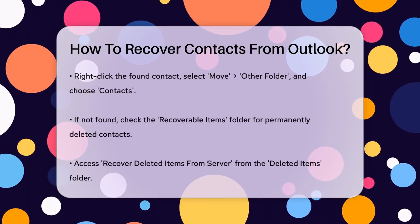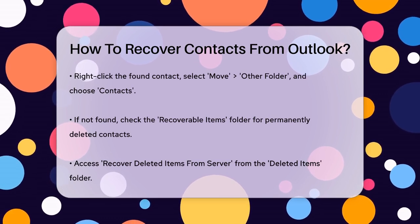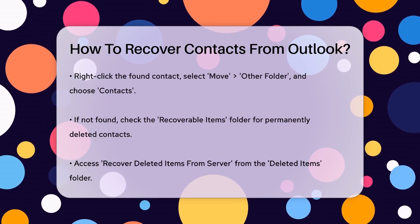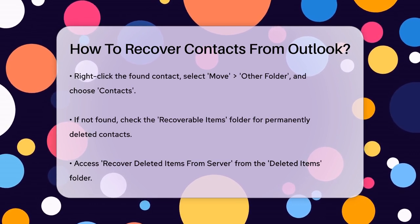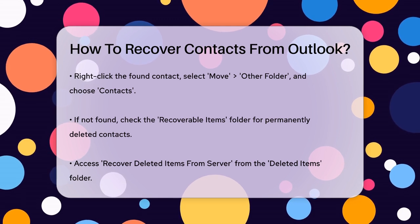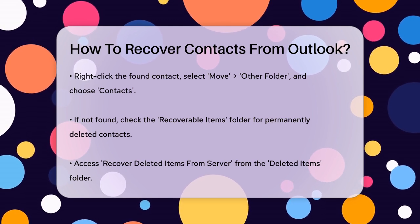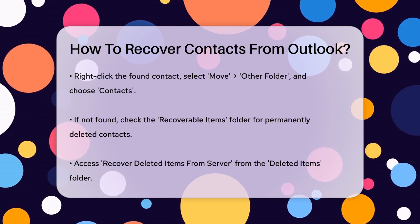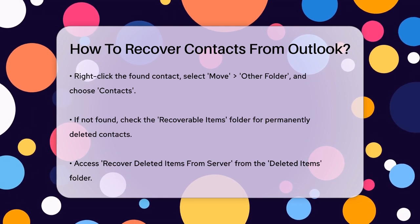If the contact is not in the Deleted Items folder, you'll need to look in the Recoverable Items folder. This is a hidden folder where contacts are moved if they've been permanently deleted. To access it, go to your email folder list, click on Deleted Items, ensure Home is selected, and then click Recover Deleted Items from Server. Here you can find and restore your deleted contact by selecting it and clicking Restore Selected Items.